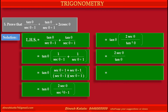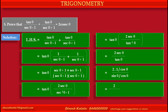At the numerator, 2 into sec theta equals 2 into 1 upon cos theta. And tan theta can be written as sin theta upon cos theta. Dividing by cos theta, we get 2 upon sin theta, which equals 2 cosec theta — the required right hand side.